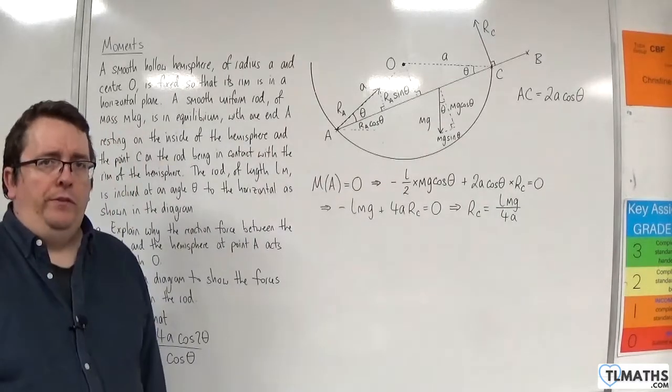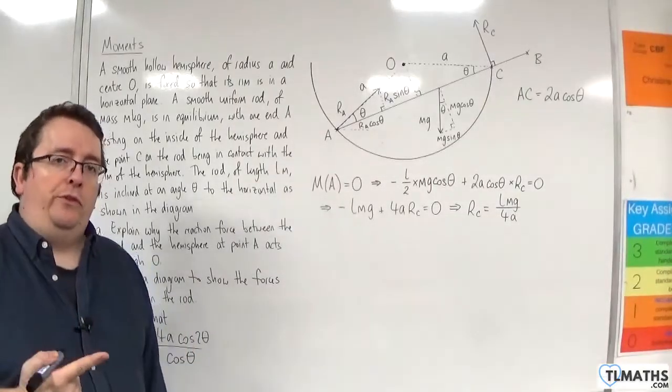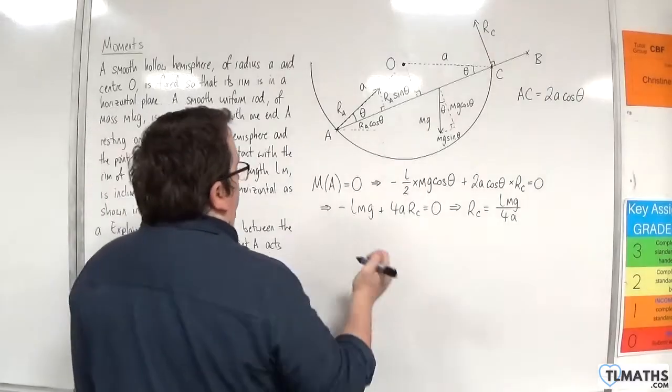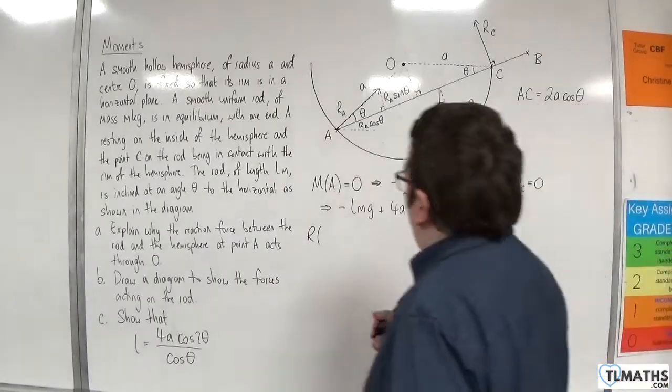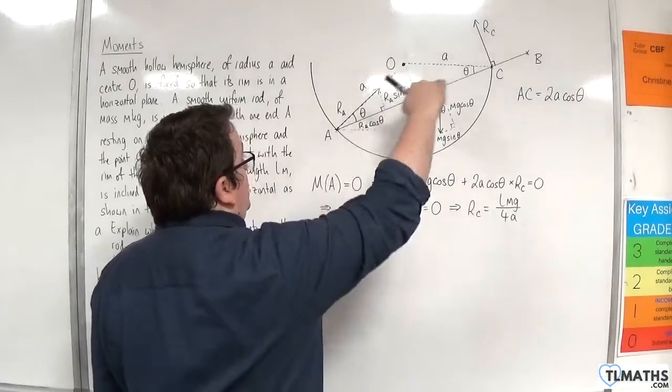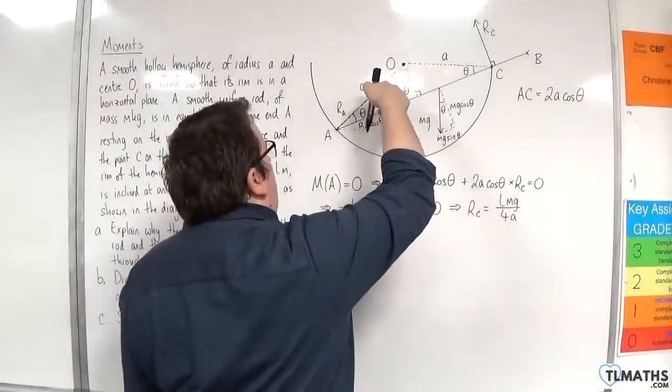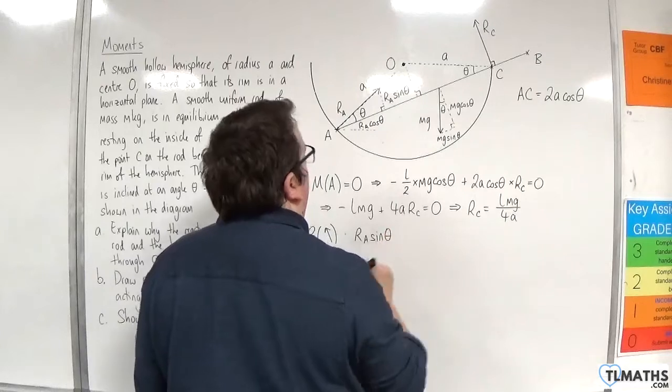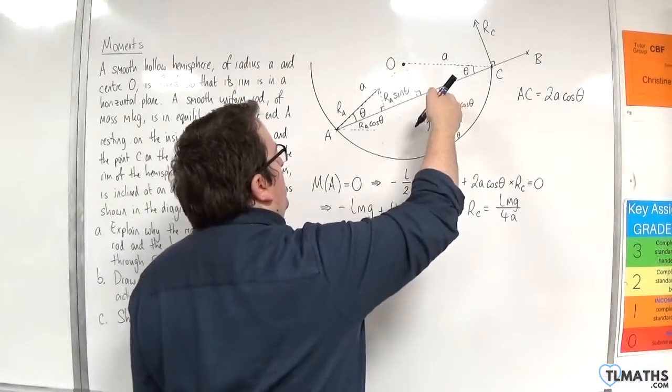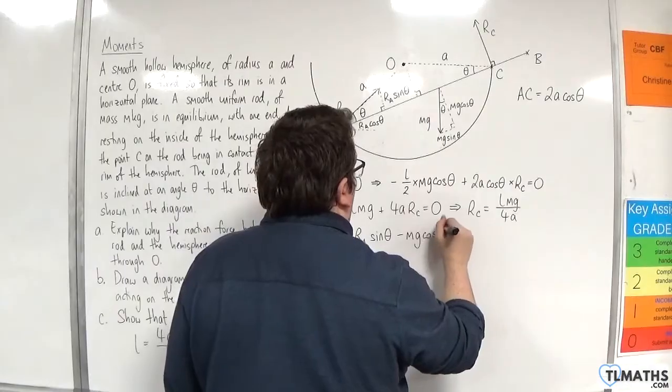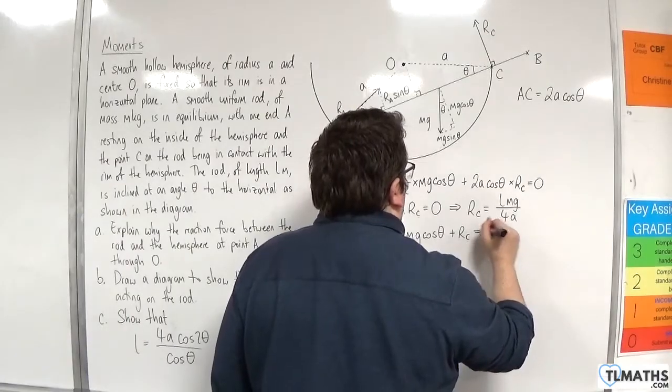Now I'm going to resolve forces. When we deal with moments problems, it comes down to taking moments, resolving forces. So now I'm going to resolve forces. And I'm going to resolve forces perpendicular to the rod. So what have I got? I've got the R A sine theta. Then I've got take away M G cosine theta. And I've got plus RC equals 0. I think I'll leave that for the moment.